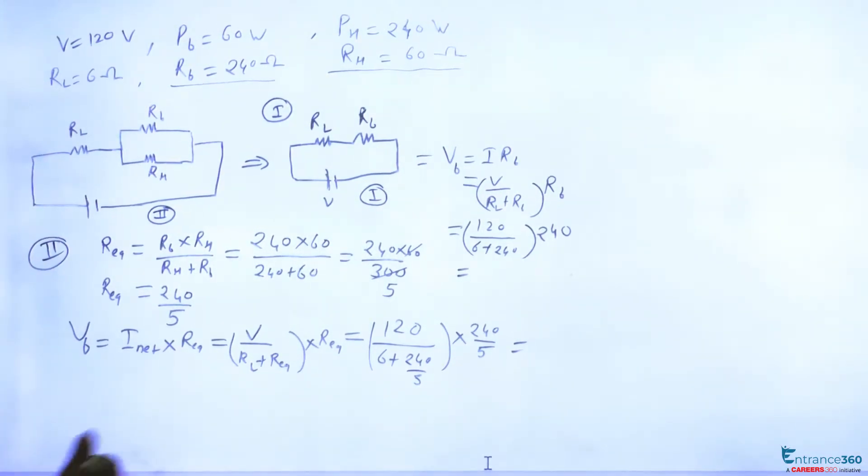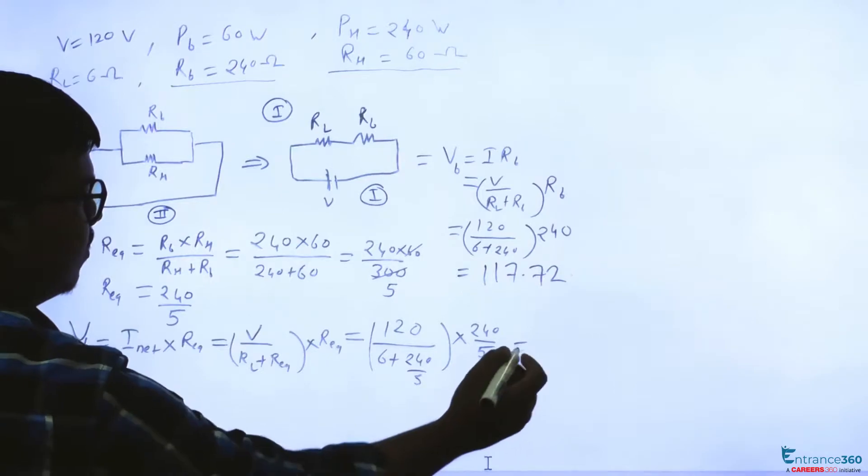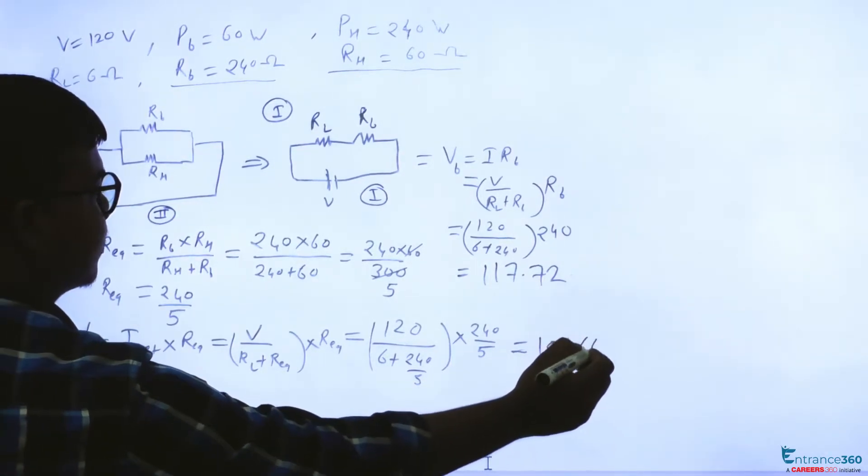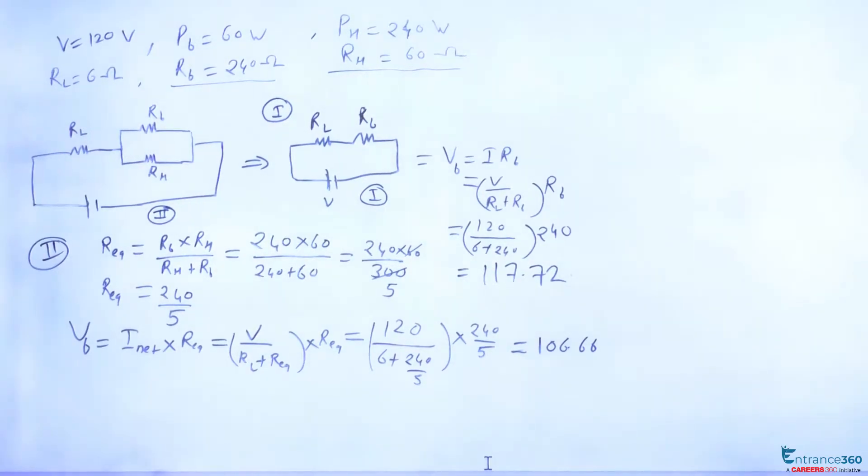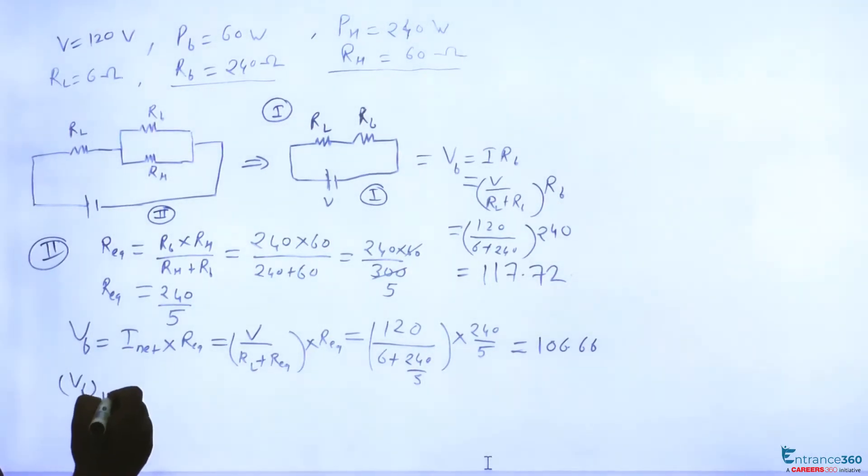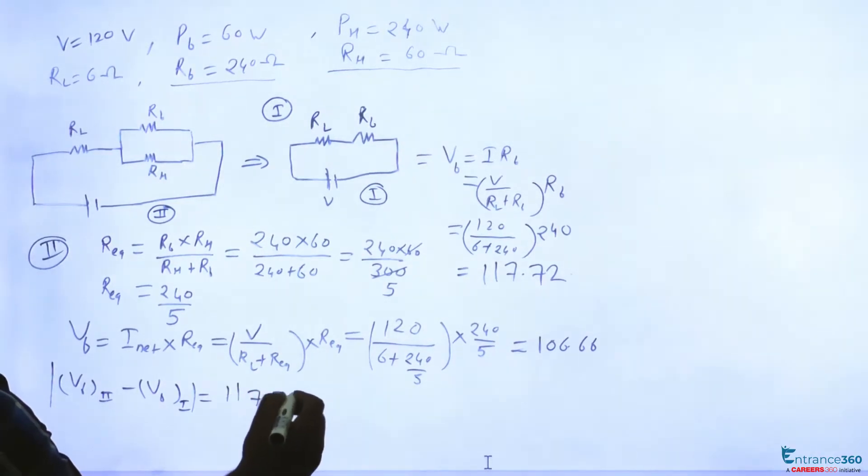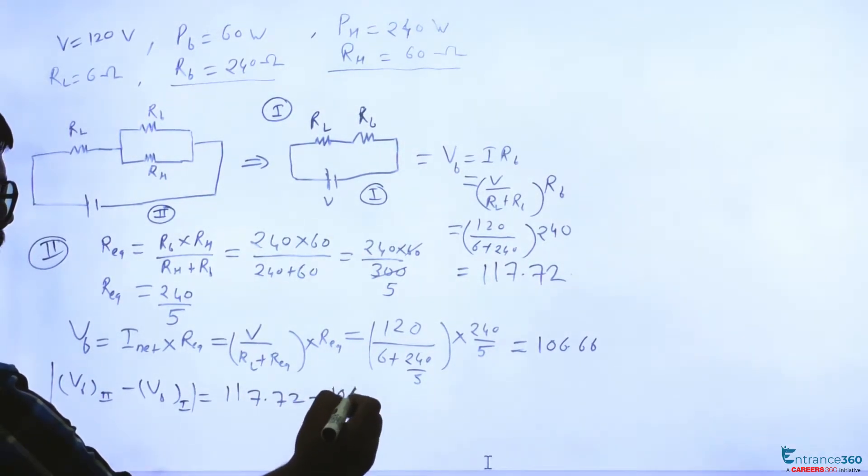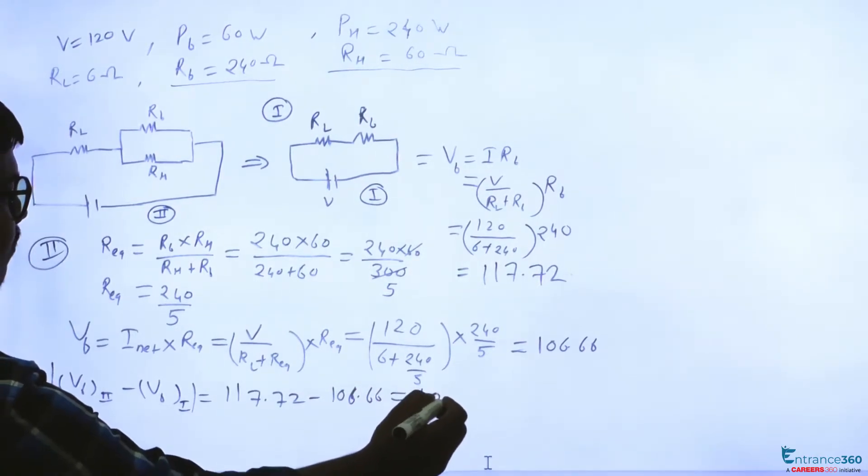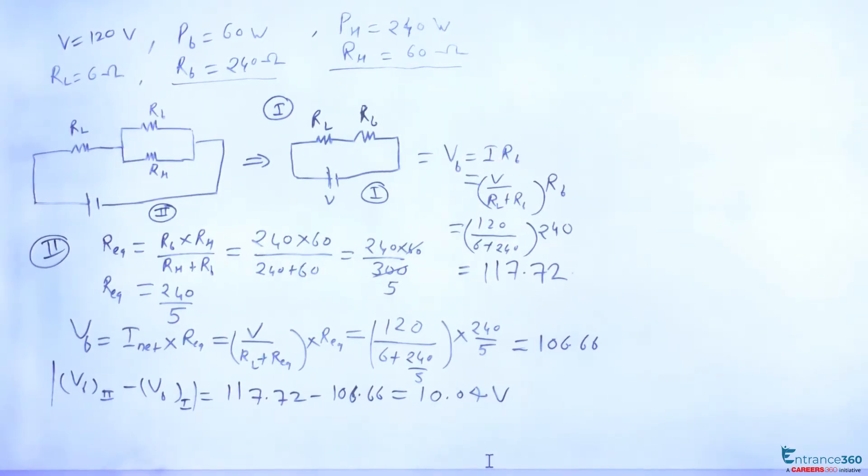So after calculating this value we get this as 117.72 and this value we get 106.66. Then we want to find out voltage drop, means what is the difference between the voltage across bulb in these two conditions. So we can simply write VB in second case minus VB in first case, which is 117.72 minus 106.66, which can be written as 10.04 volt.